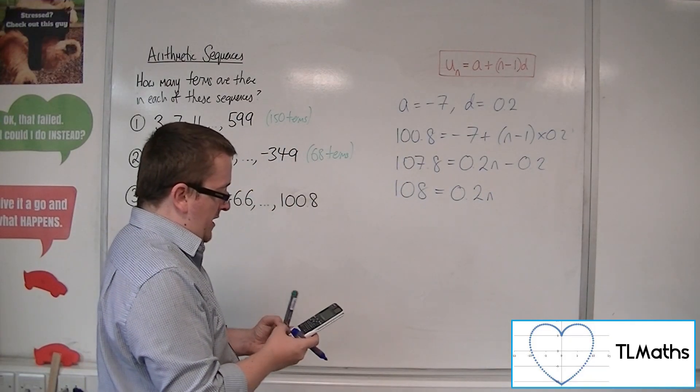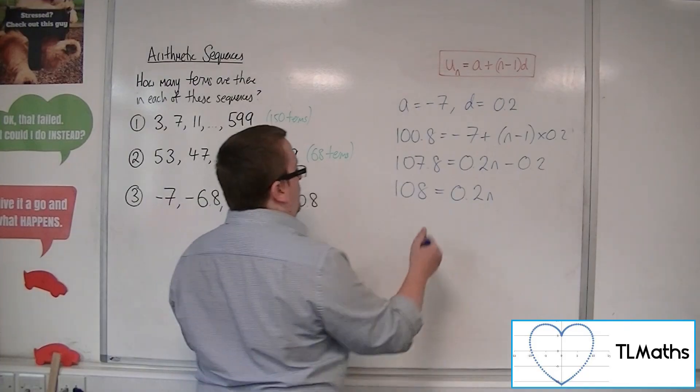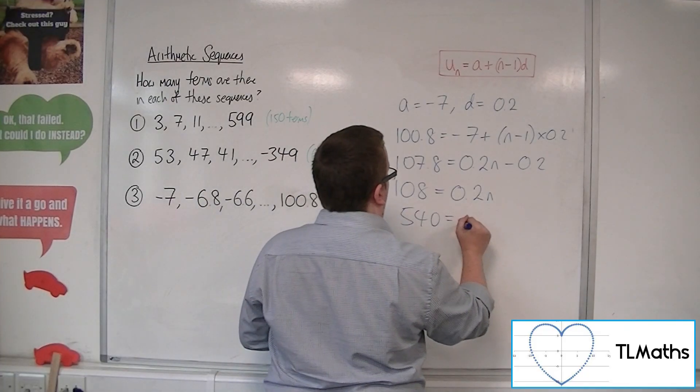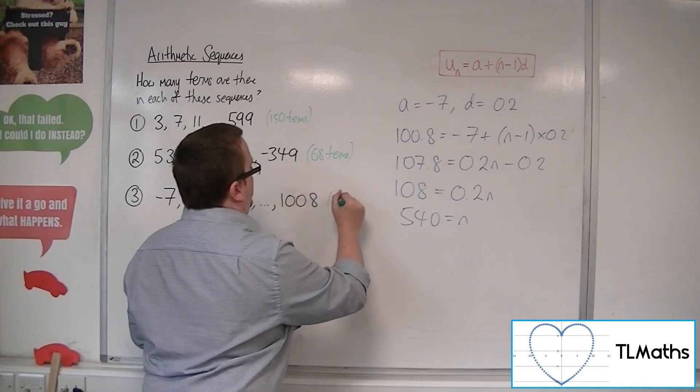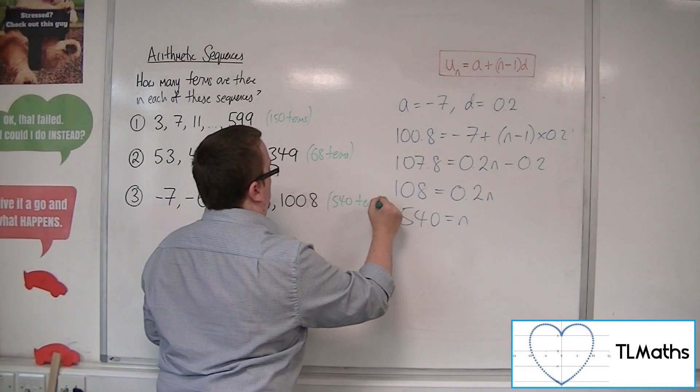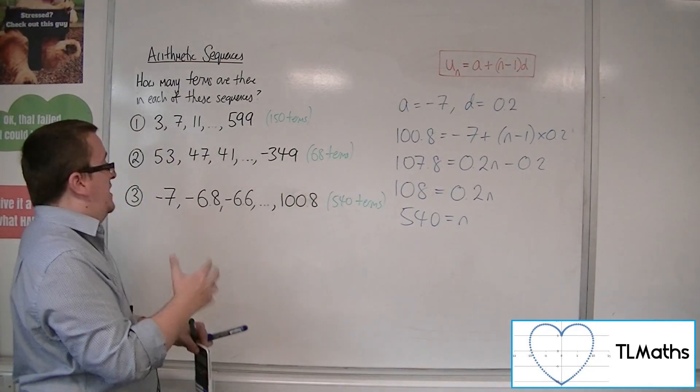And then 108 divided by 0.2 is 540. And so there are 540 terms in sequence number 3.